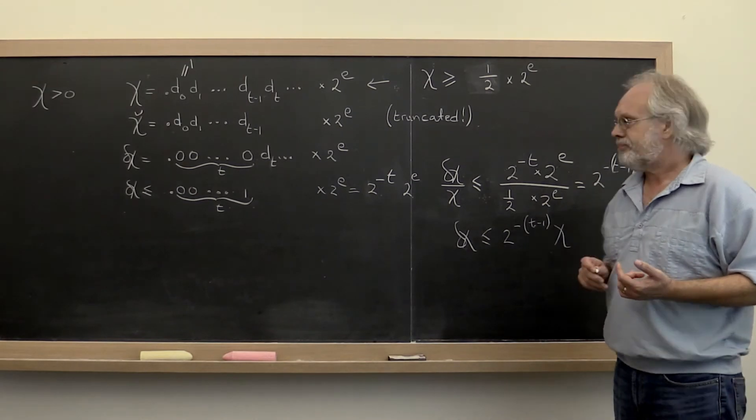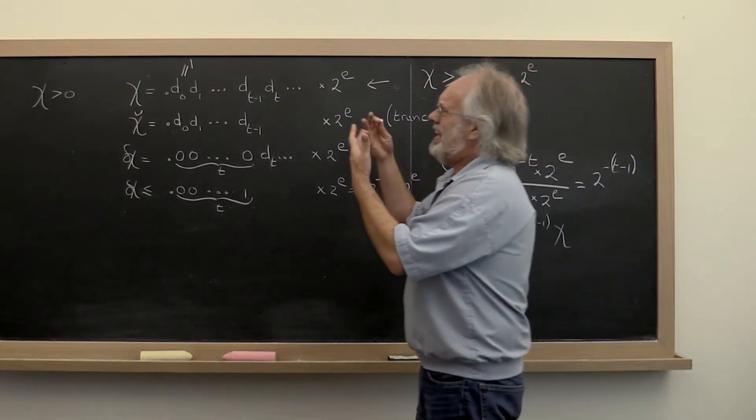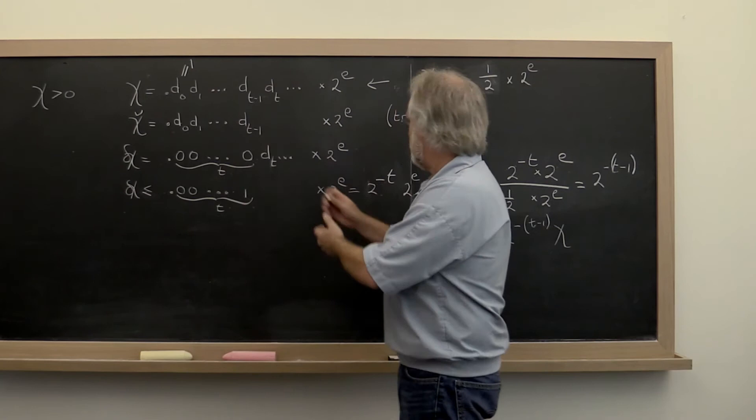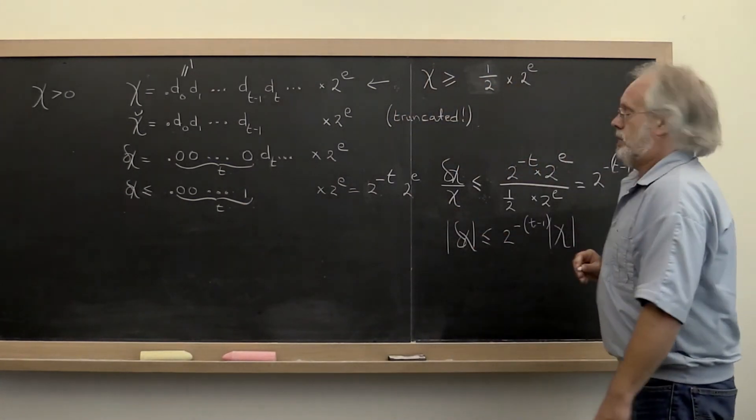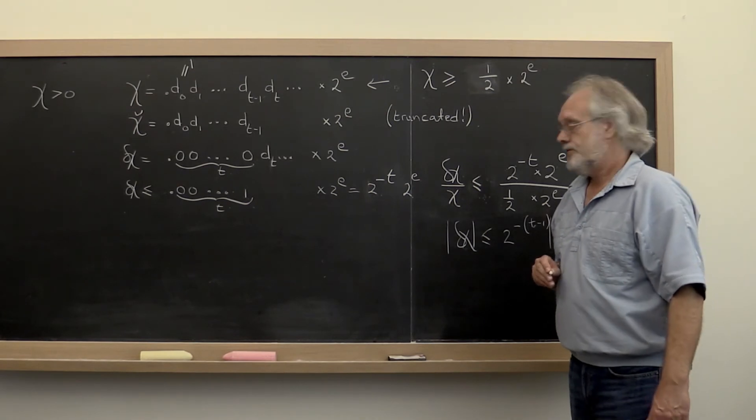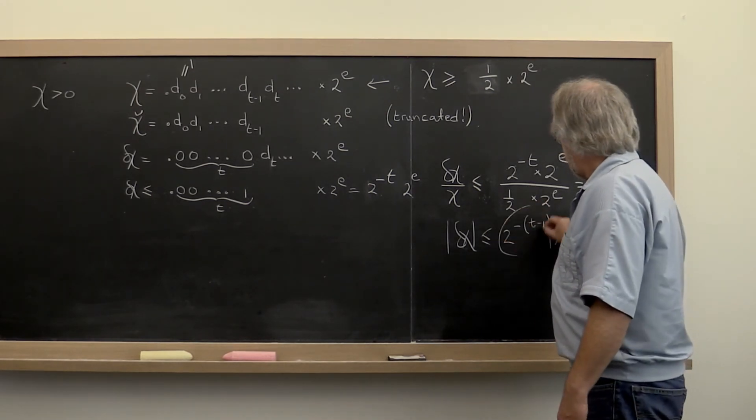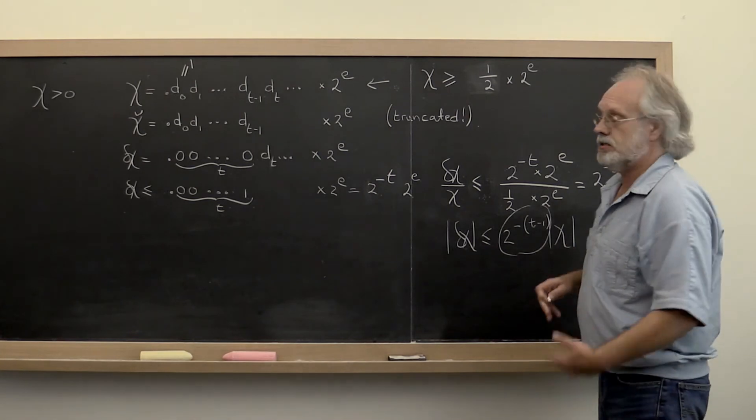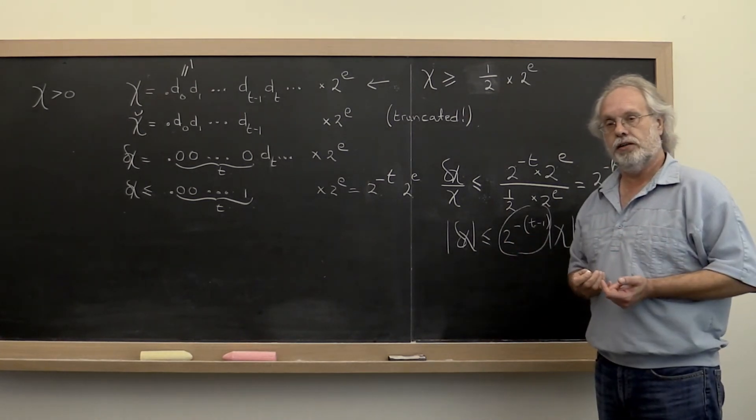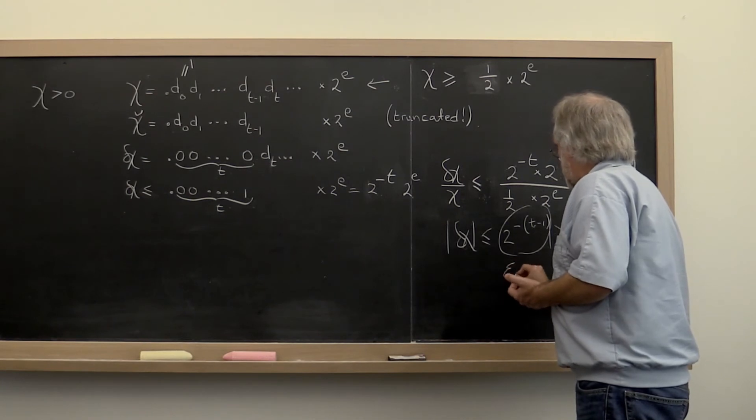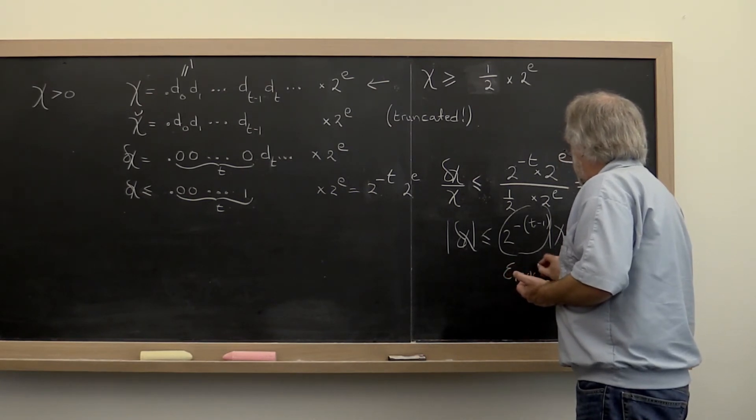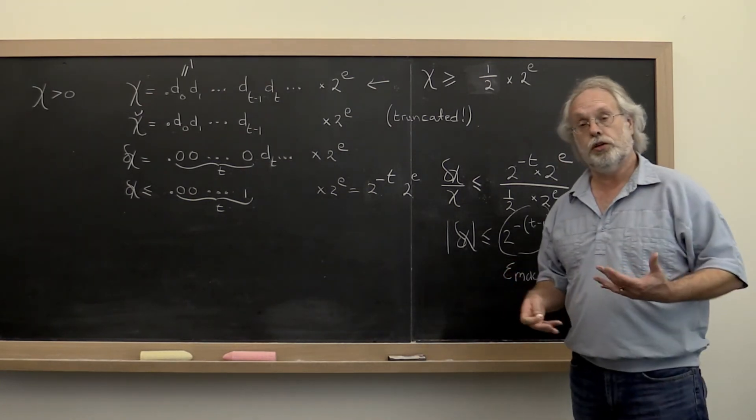Alright? And obviously if chi is negative then we can do a similar analysis and then we can just put absolute values around all of this. Now this number right here then characterizes what kind of relative error is introduced. That number is often referred to as the machine epsilon. Sometimes it's called the unit roundoff.